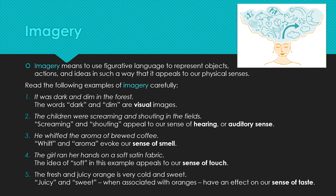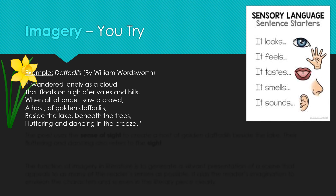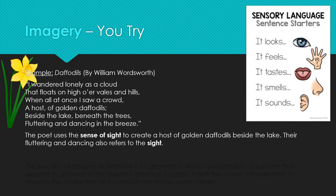Example 5: 'The fresh and juicy orange is very cold and sweet' — juicy and sweet, when associated with oranges, have an effect on our sense of taste. Now practice with imagery. We're going to look at Daffodils by William Wordsworth: 'I wandered lonely as a cloud that floats on high over vales and hills, when all at once I saw a crowd, a host of golden daffodils, beside the lake, beneath the trees, fluttering and dancing in the breeze.' The poet uses the sense of sight — golden daffodils beside the lake, and their fluttering and dancing, both refer to sight.